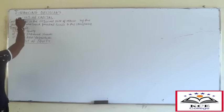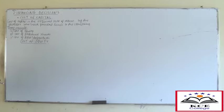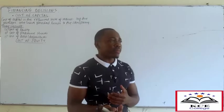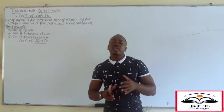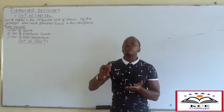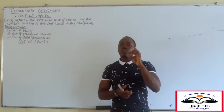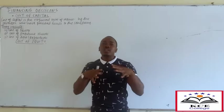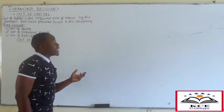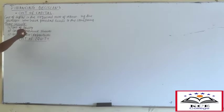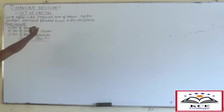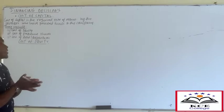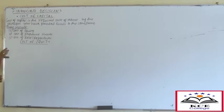What do we mean by the cost of capital? You already know what NPV is - it's the inflow minus the outflow, taking into consideration the time value of money. The cost of capital is the required rate of return by the investors who have provided funds in the company. Investors are classified into three: cost of equity, cost of preference shares, and cost of debt or debentures.